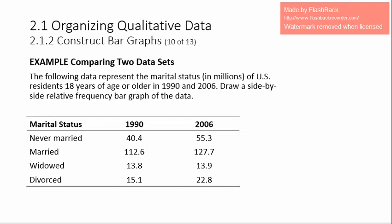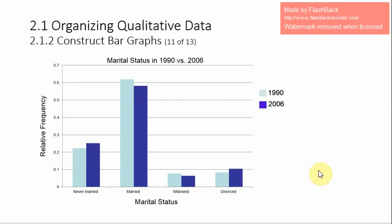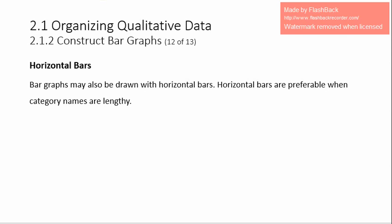After creating relative frequency distributions for both years, we represent them using a side-by-side bar graph. The light blue represents marital status in 1990 and the dark blue represents 2006. From this bar graph, you can notice some trends: the proportion of married people in the 1990s seems higher than in 2006, while the proportion of never-married people in the 1990s is less than in 2006. Sometimes, instead of drawing bars vertically, we draw them horizontally.